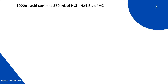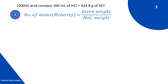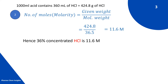The next step is to convert this mass of HCl into number of moles. For calculating number of moles, we use the formula: moles = given weight / molecular weight = 424.8 / 36.5. By calculating, we get 11.6 molar. So 36% concentrated HCl is 11.6 molar.